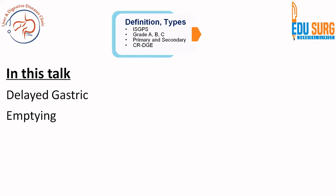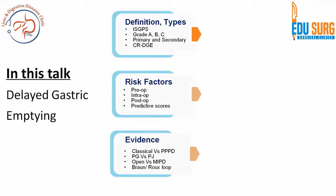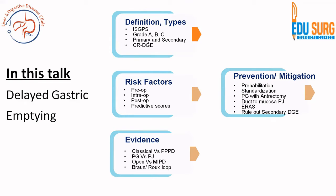In this talk on delayed gastric emptying, we will look at the definition and the types of delayed gastric emptying, the ISGPS definition, the grades, primary and secondary DGE, and clinically relevant DGE. We will look at the risk factors in pre-operative and intra-operative phases and look at the predictive scores. We will see the evidence on probable risk factors and accordingly devise strategies of prevention. Various studies will be discussed briefly, and finally we will discuss prevention and mitigation strategies including pre-habilitation, the role of standardization of surgery, the role of duct-to-mucosa PJ, enhanced recovery after surgery, and the important point to rule out secondary delayed gastric emptying, which has a very different management algorithm.